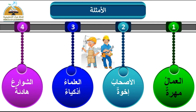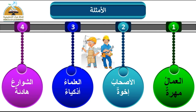المثال الرابع: الشوارع هادئة. الشوارع جمع تكسير لأنه تغيرت صورة مفرده عند الجمع، فالشوارع مبتدأ مرفوع وعلامة رفعه الضمة. وهادئة هي الخبر الذي أكمل لنا معنى الكلام، خبر مرفوع وعلامة رفعه الضمة. ملاحظة: الشوارع جمع وهادئة مفرد، لأنه جمع غير عاقل.